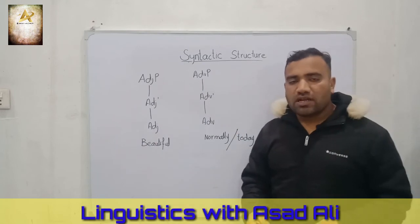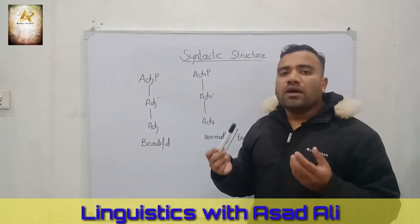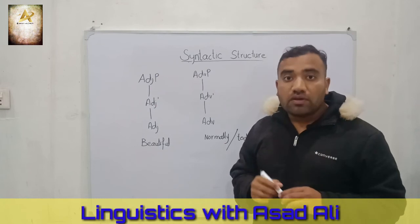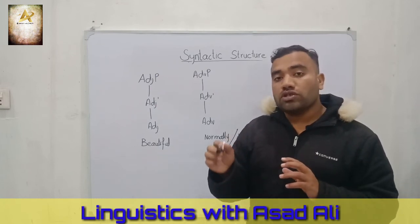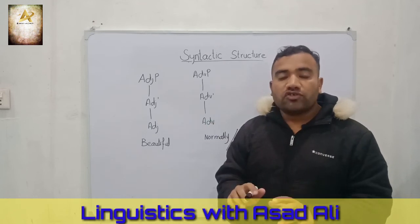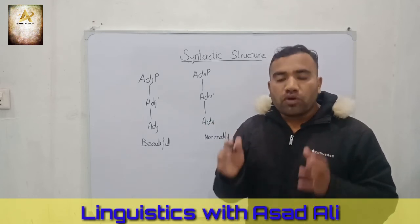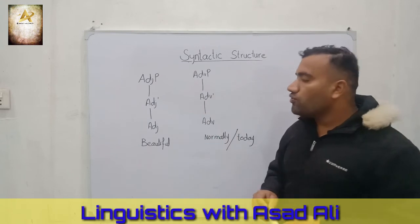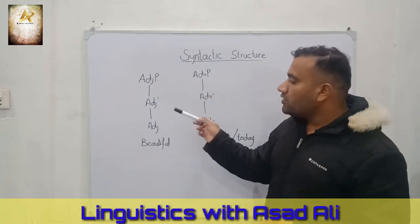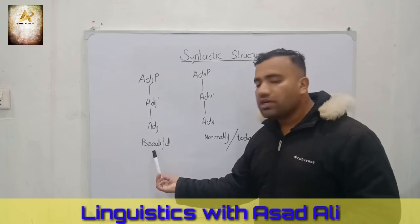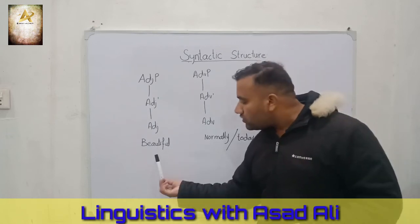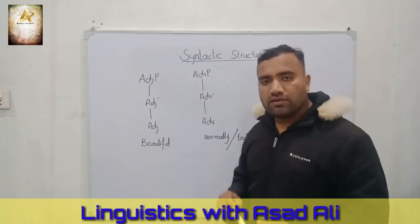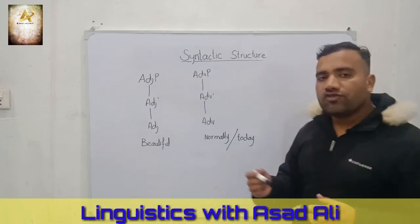The third syntactic category is the adjective phrase. If we draw the structure of the adjective phrase, our theory will be fulfilled, because we must follow the three projection levels. If we don't follow the three projection levels, our principles and the structure will not be fulfilled. Here we have the word 'beautiful' — 'beautiful' is an adjective. We have: adjective, adjective-bar, and adjective phrase. This is the structure of the adjective phrase.